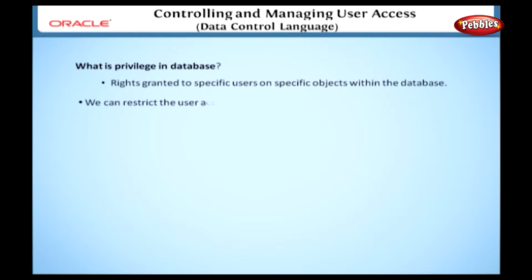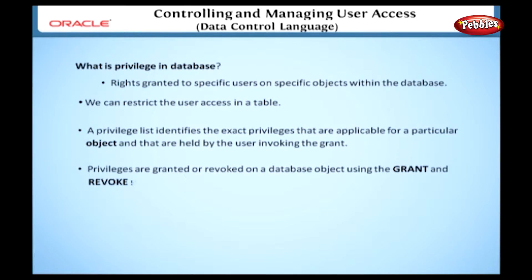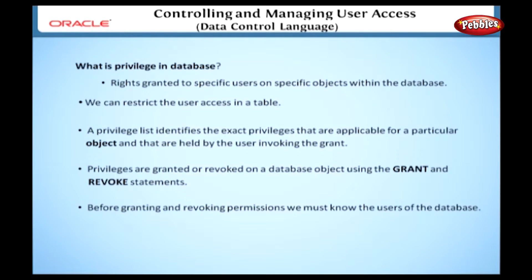Take a look at this picture for a clearer understanding. This picture gives you an idea of data control language. Using DCL, we can restrict the user's access in a table. A privilege list identifies the exact privileges that are applicable for a particular object and that are held by the user invoking the grant. Privileges are granted or revoked on the database object using the grant and revoke statements.